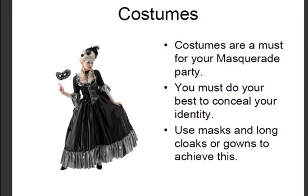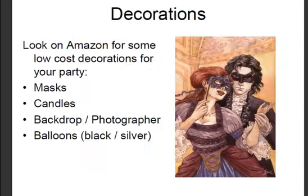You can find many cheap gowns, cloaks, or masks on Amazon, and some really good quality ones too. Look on Amazon for party decorations as well — you can find masks to place around your venue, and if one of your friends forgets to buy a mask, you can lend one to them. Try and darken your venue a little bit to create an aura of mystique, using dim lighting or candles. You can also have a backdrop by your entrance with a photographer present to capture memories. And if you're getting balloons, the masquerade colours are black and silver.